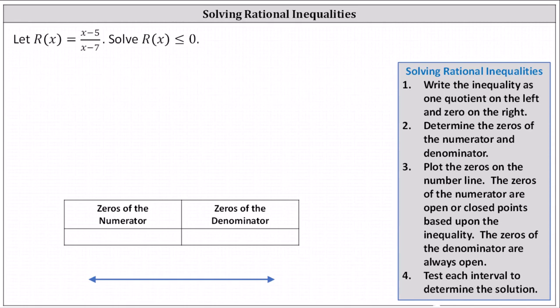Let r of x equal the quotient of x minus 5 and x minus 7. Solve r of x less than or equal to 0. This indicates we want to solve the rational inequality of the quantity x minus 5 divided by the quantity x minus 7, less than or equal to 0.